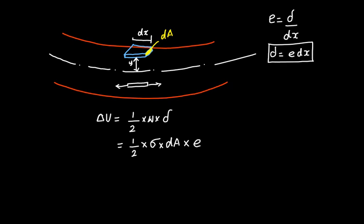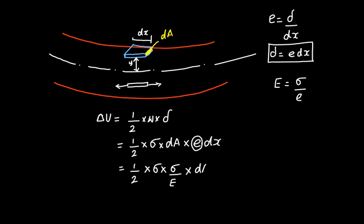So δU = ½ × σ × ε × dA × dx. Since Young's modulus E = σ/ε, we have ε = σ/E. Substituting, δU = (1/2) × σ × (σ/E) × dA × dx = σ²/(2E) · dA · dx.